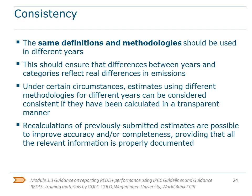Consistency means that the same definitions and methodologies should be used in different years. This should ensure that differences between years and categories reflect real differences in emissions. Under some circumstances, estimates using different methodologies over time can be considered consistent if they have been calculated in a transparent manner. Recalculations are possible, are frequent, and the purpose is to improve accuracy and completeness. All the relevant information should be properly documented. For REDD+, ensuring consistency in definitions and estimates — including for the pools and gases considered — between the reference level and the future reporting of results of actions is absolutely key. Within the reference level, consistency should also be ensured between historical data and any future projections.